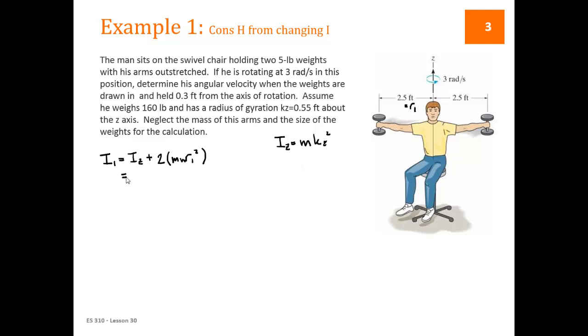So then his moment of inertia when he's holding his hands outstretched is going to be I1, which is going to be Iz, his own moment of inertia, plus the moment of inertia due to those weights. There are two of them, and the moment of inertia due to each, if we're treating it as a particle with mass Mw, would be Mw times R1 squared, and R1 is equal to 2.5.